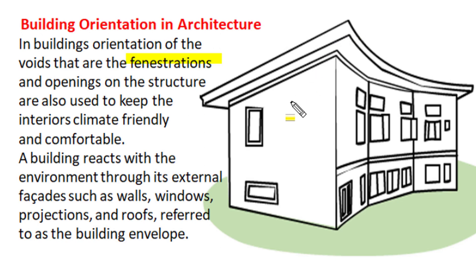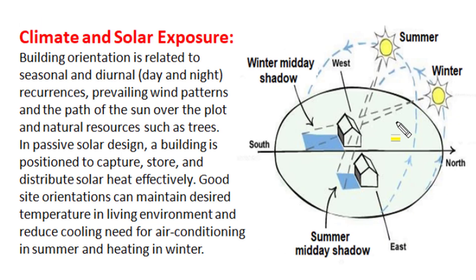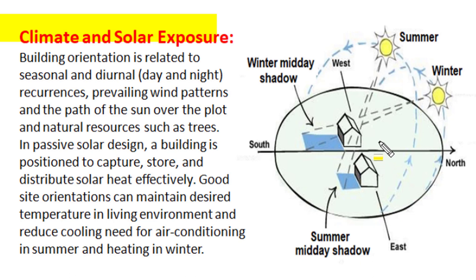Doors, windows, and glass panels — collectively called the building envelope — are decided to keep building operation climate-friendly, comfortable, and energy efficient. A building reacts with the environment through these external facets such as walls, windows, roofs, projections, doors, and glass panels. Decisions regarding the building envelope are very significant. Climate of the region and solar exposure on the building are very important in building orientation.